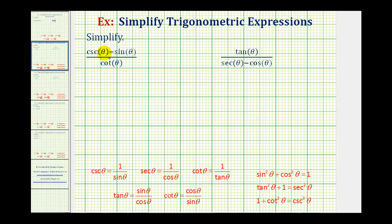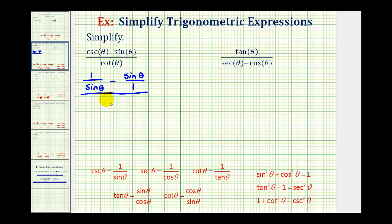So cosecant theta is equal to one divided by sine theta. And then for sine theta, because this is a fraction, we're going to write sine theta over one. And then we can write cotangent theta as cosine theta divided by sine theta.